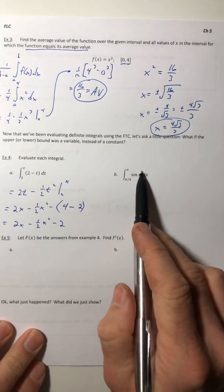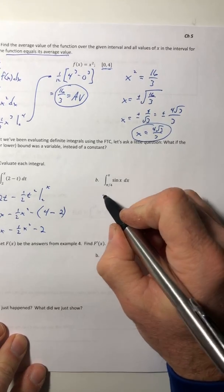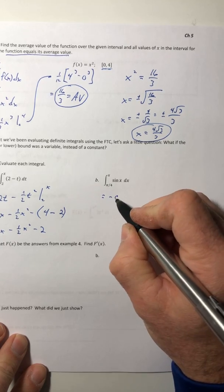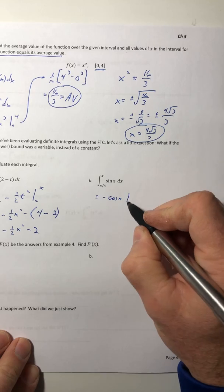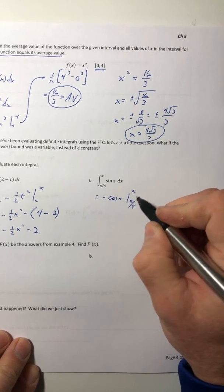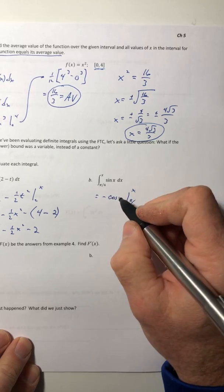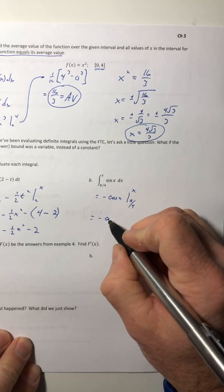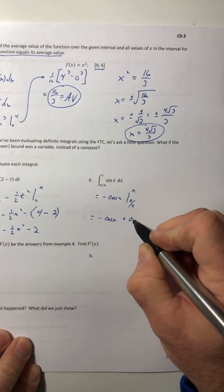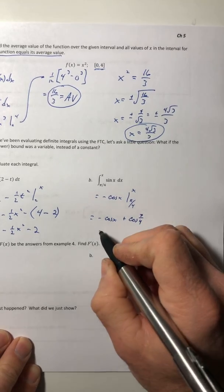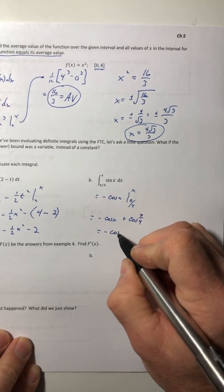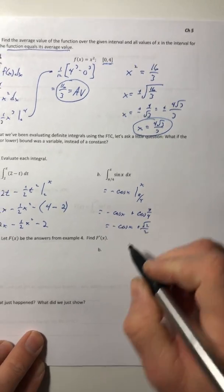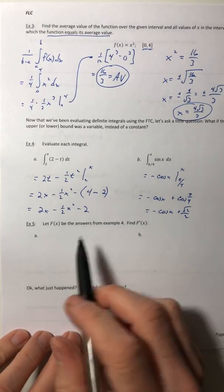And the same type of thing would happen over here. So the integral of sine, just be careful, it's not cosine, it's negative cosine. We're going from pi over 4 to x. So plug in the x, negative cosine of x, and then plus cosine of pi over 4. And then evaluate cosine of pi over 4. So root 2 over 2. Okay, so simple enough.